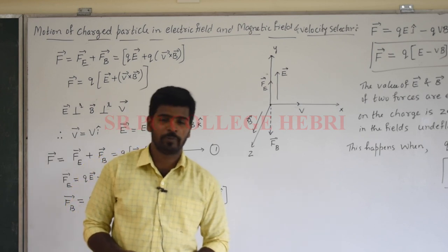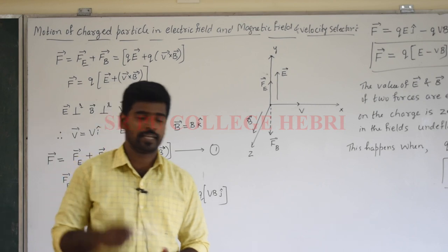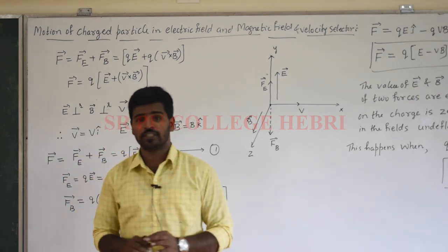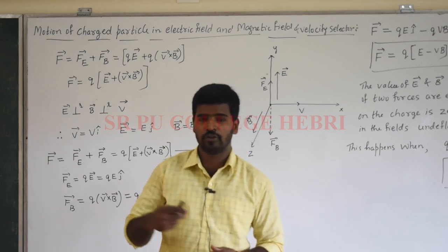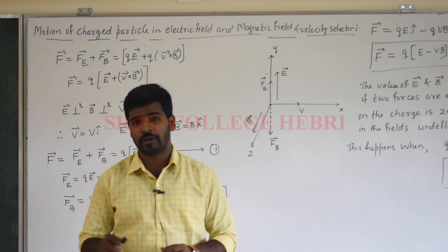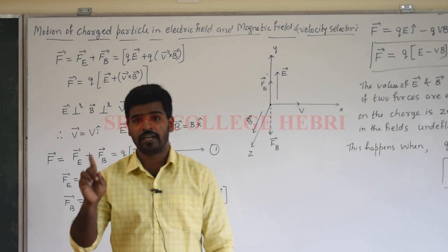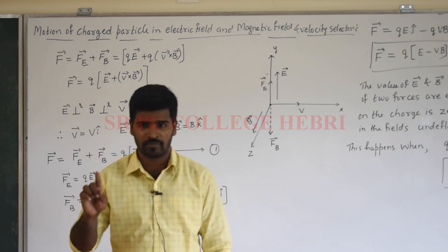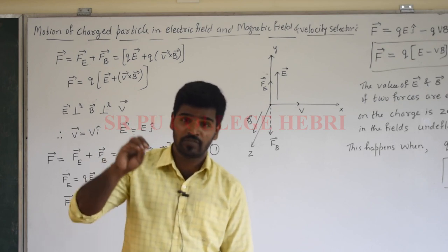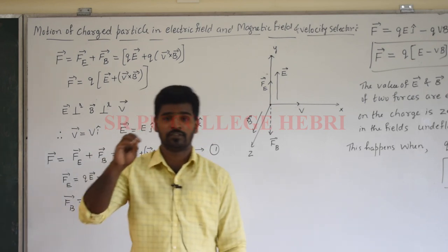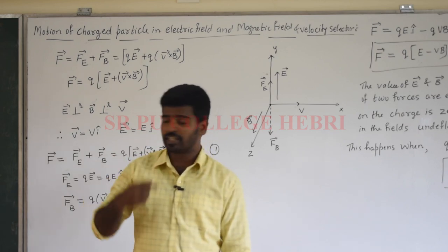Hello students. In the last session we discussed the motion of a charged particle in a magnetic field, where we derived the expression for the radius r = mv/qB, the time period of revolution, and the angular frequency of the charged particle. We also covered that when the velocity vector is perpendicular to the magnetic field, the path is circular, and when parallel, the path is a straight line.